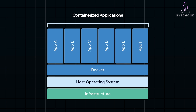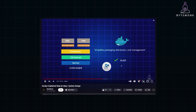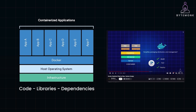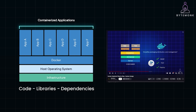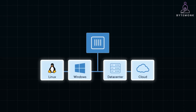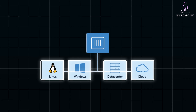Before we get into Kubernetes, let's quickly cover Docker and containers. I have covered all aspects of Docker in detail in my previous video. Simply put, a container is a lightweight, self-contained package that holds everything your app needs to run, such as code, libraries, and dependencies, all in one place. Containers solve the works-on-my-machine issue by making sure the app runs consistently across any environment.